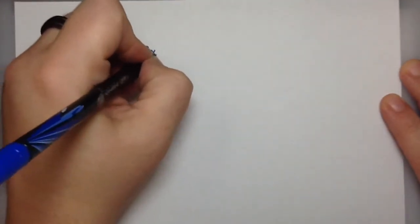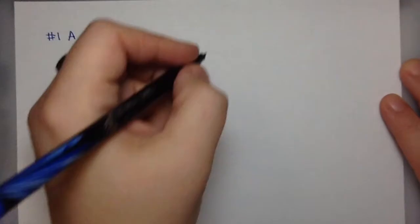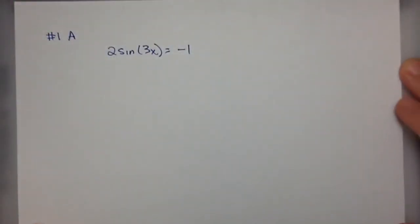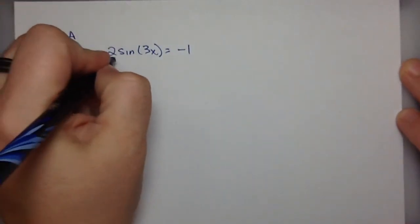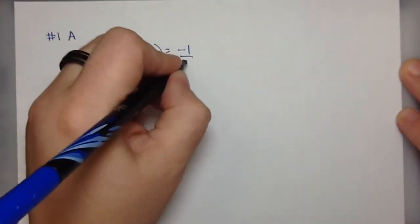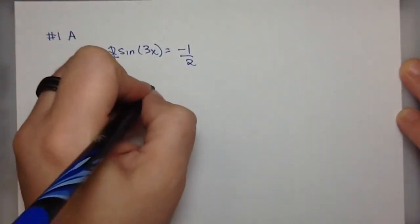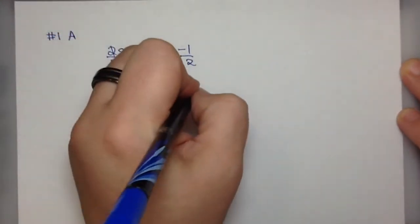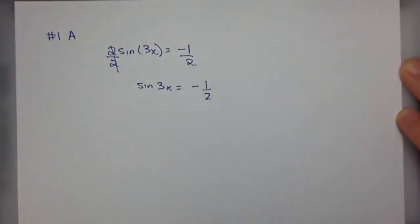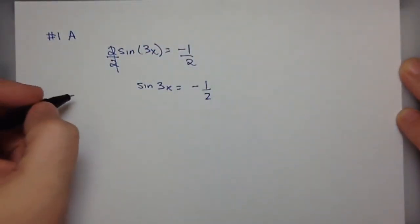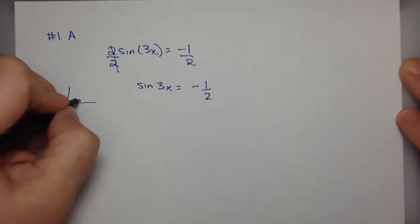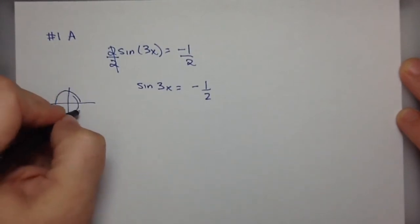So we're given twice the sine of 3x equals negative 1. The first thing I'm going to do is try and isolate my trigonometric expression, so I divide both sides by 2. This gives me the sine of 3x is negative 1 half. So immediately I begin thinking about the unit circle and where on the unit circle is sine equal to negative 1 half.